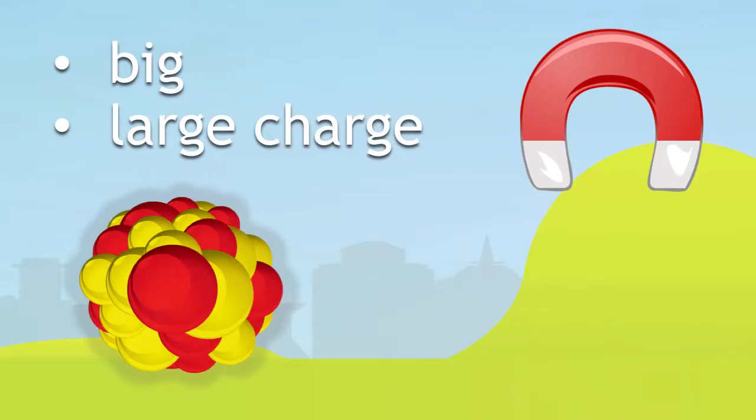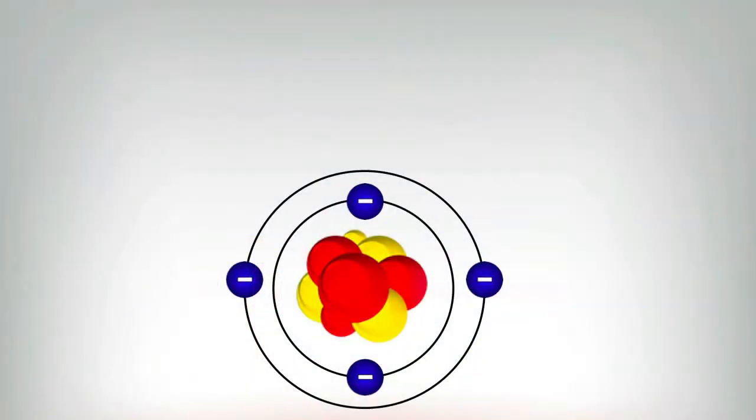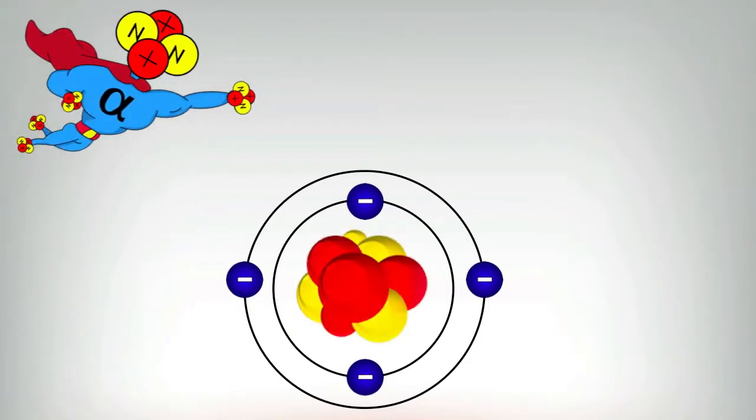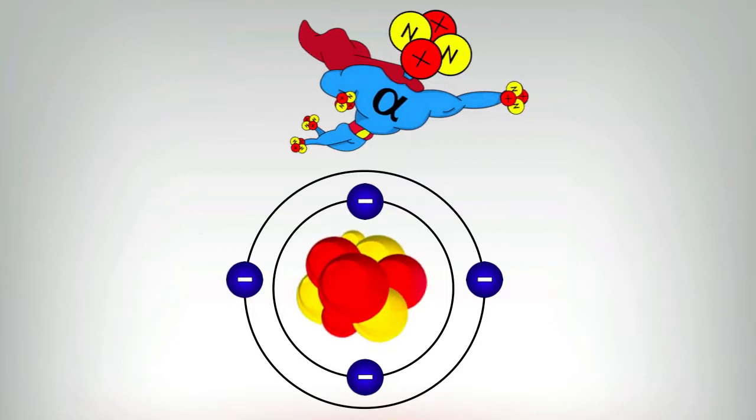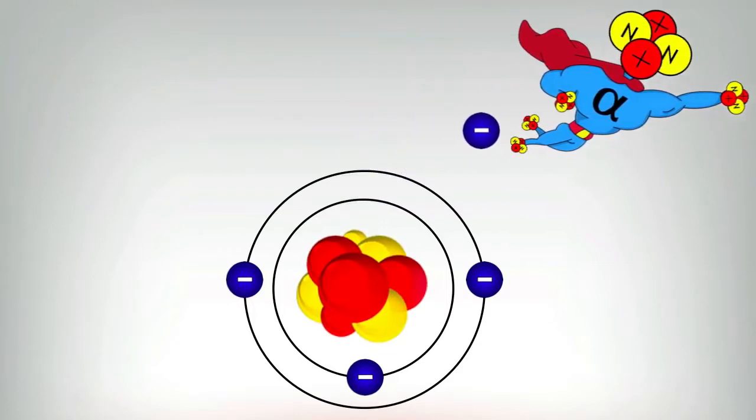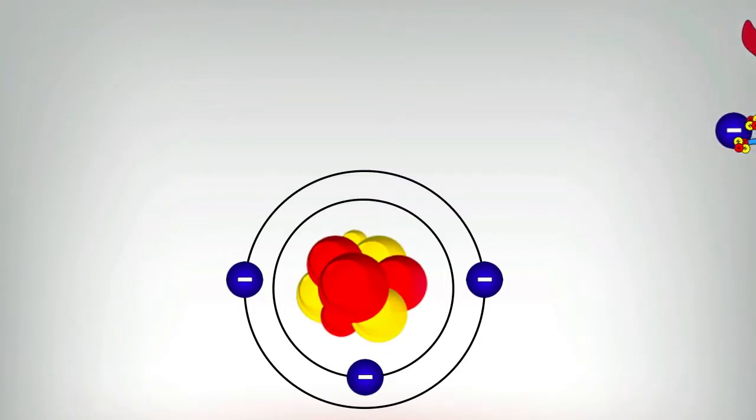If it comes across another atom, it's pretty likely to take an electron with it. Here's the alpha particle, here's an atom. The alpha particle comes across it. As it gets near, it starts to make it wobble a bit, and as it comes away, it pulls off an electron with it. This makes it very, very ionising.